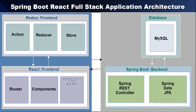In the backend, we have the Spring REST controller, which specifies the endpoints we will access via controller actions. We also have Spring Data JPA, which acts as the bridge between our backend application — Spring Boot — and the database. We use MySQL to store data. This is the whole overview of the Spring Boot React full stack application architecture.